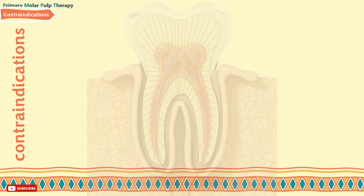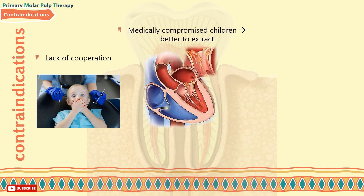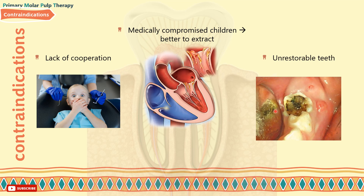When can pulp treatment be contraindicated? For example, lack of cooperation from the child or the carers. Also, systemically compromised children at risk from dental bacteremia — like immunocompromised patients or those at risk of developing infective endocarditis, or any condition where a focus of infection is potentially dangerous. In such cases, it is better to extract the involved tooth than treat the pulp. Also, unrestorable teeth where there is insufficient coronal tooth structure to ensure an efficient coronal seal.